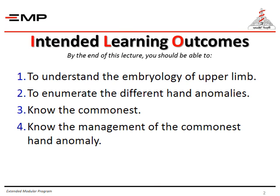The intended learning outcomes: by the end of this lecture, you should be able to understand the embryology of the upper limb, enumerate the different hand anomalies, know the commonest, and know the management of the commonest hand anomaly.